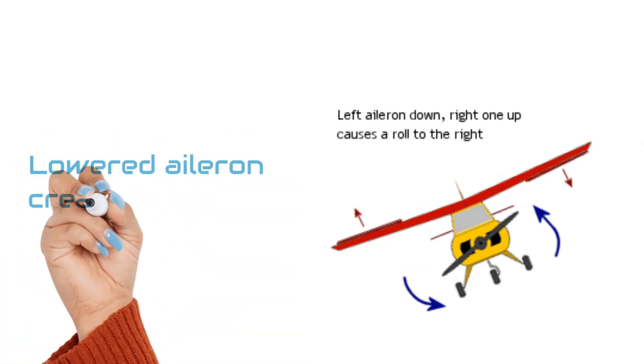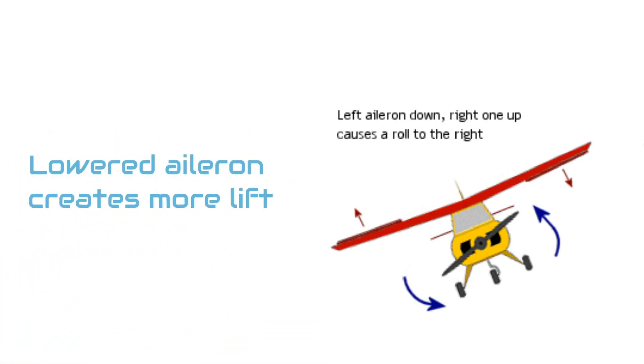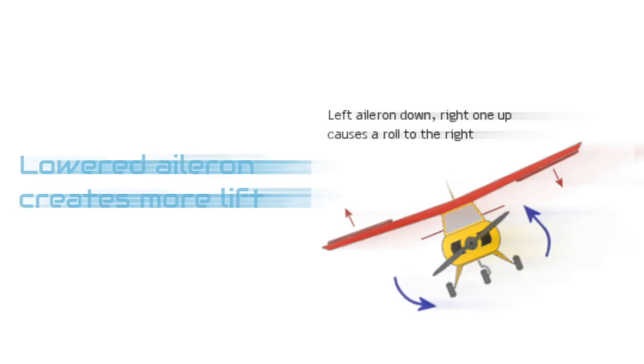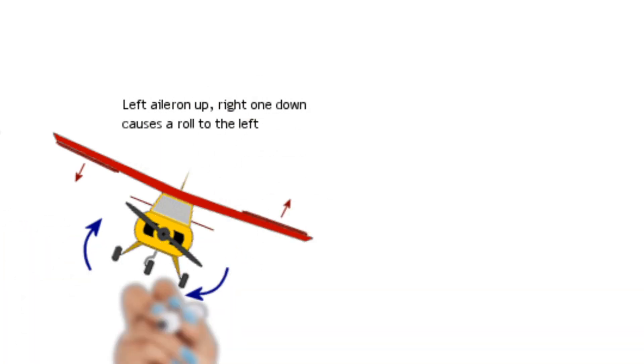The aileron that lowers creates more lift and causes that wing to rise. When we roll the control yoke to the left, the opposite happens.